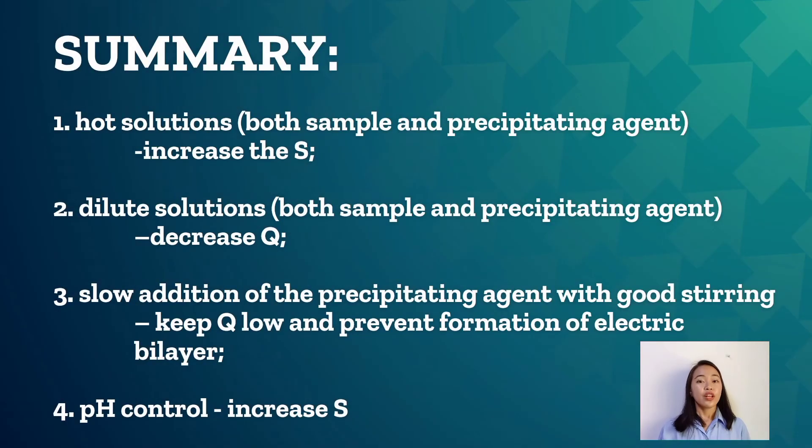So these are the summary of the four ways in controlling the particle size. The first one is hot solutions. This is done to increase the solubility. The second one is dilute solutions. This is done to decrease the Q or the molar concentration of the solute at any instant.